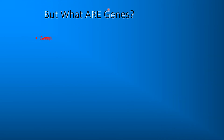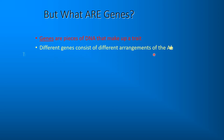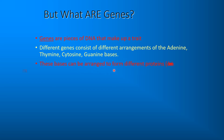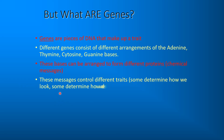But what are genes exactly? Genes are pieces of DNA that make up a trait. Different genes consist of different arrangements of the Adenine, Thymine, Cytosine, and Guanine bases. These bases can be arranged to form different proteins and chemical messages. These messages control different traits — some determine how we look, some determine how we feel and function. There are many millions of possible combinations of these four bases, which accounts for the differences and similarities between life forms on Earth.